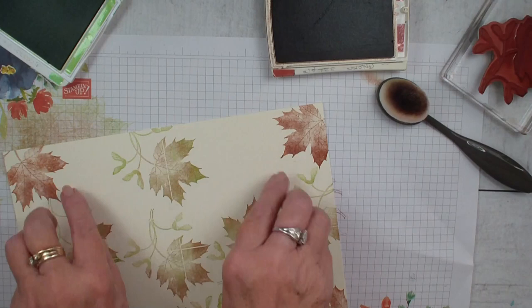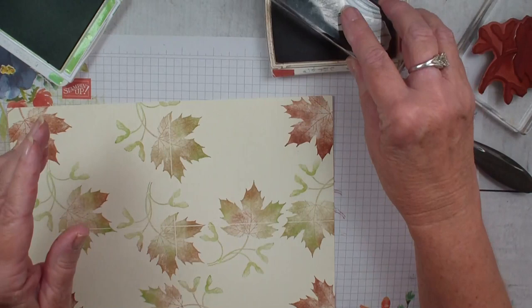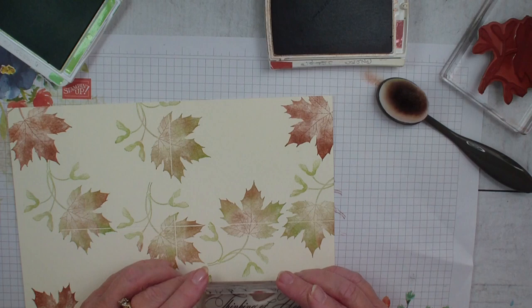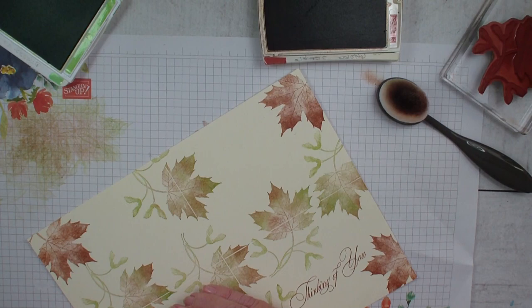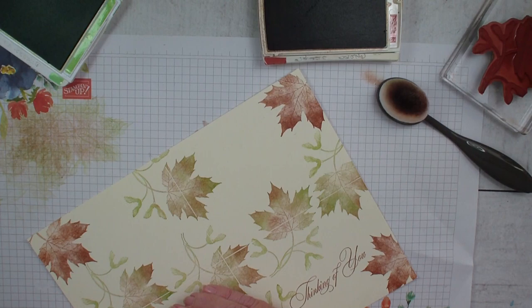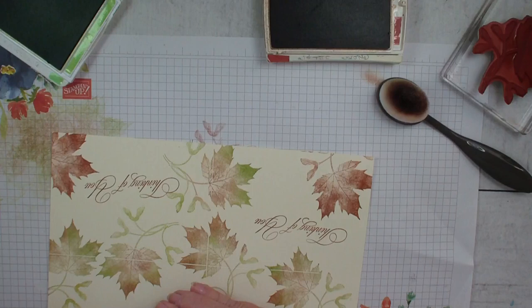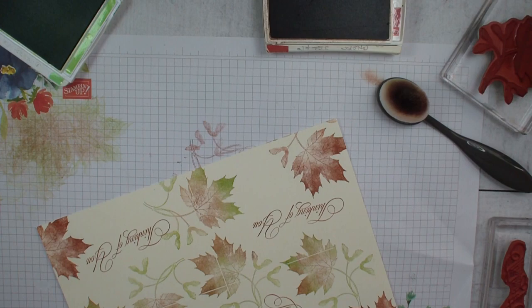Now, I could use die cuts and do a little more embellishment in the center, but I'm going to make these cards very simple. I'm using my go to greetings and I'm going to stamp the thinking of you. Thinking of you, of course, can be used for anything birthday, someone that's not feeling well. And so I'm just stamping that greeting between the leaves.